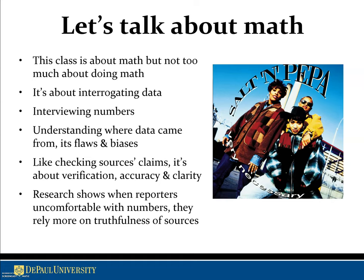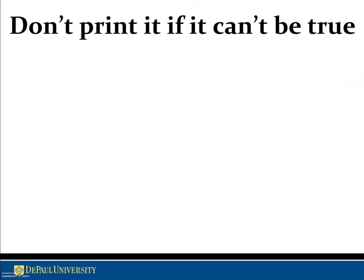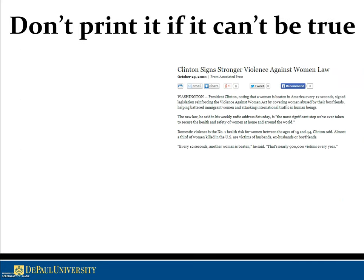In this first module we're going to focus on how research shows that reporters are uncomfortable with numbers. They rely more on the truthfulness of their sources, and that can lead them to be manipulated. You want to really interrogate the quality of the data you're working with. We're going to start with examples such as: don't print it or don't publish it if it can't be true.